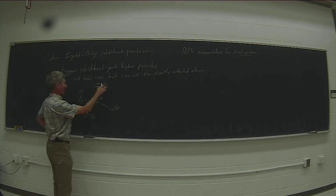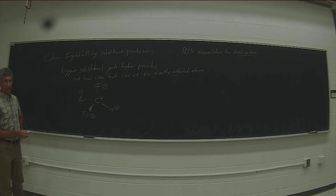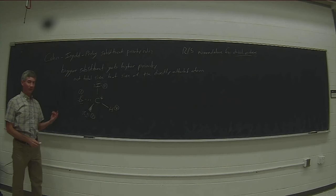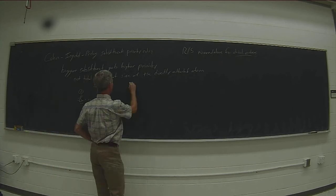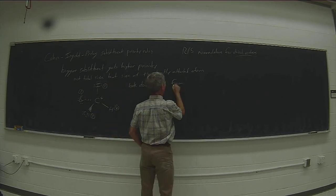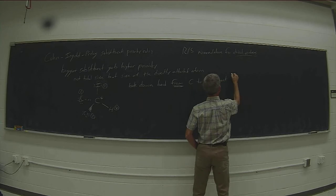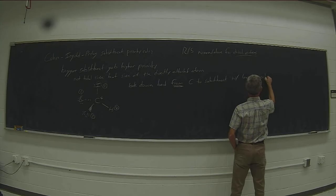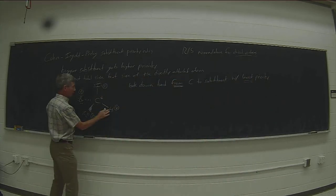So I've numbered my substituents: iodine is first, bromine second, chlorine third, and hydrogen is the fourth priority substituent. In order to name this as R or S, I need to look down the bond from the carbon to the fourth priority substituent — essentially a Newman projection looking down the carbon–hydrogen bond.